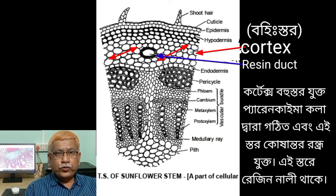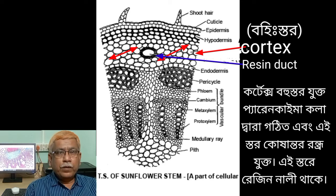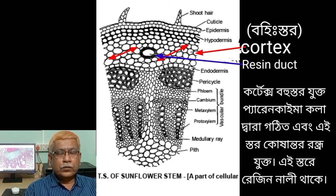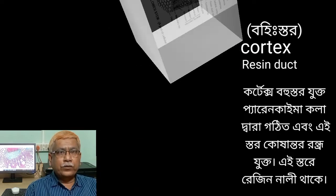Next to the hypodermis there is cortex or ground cortex. It is multilayered, made of parenchymatous cells with intercellular spaces. This layer sometimes contains resin ducts.